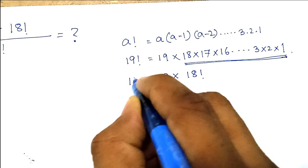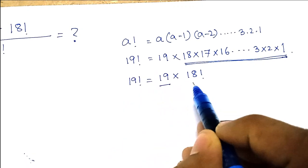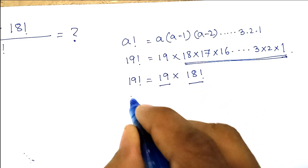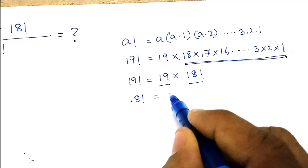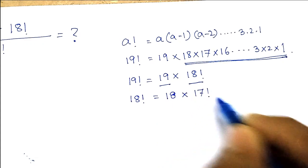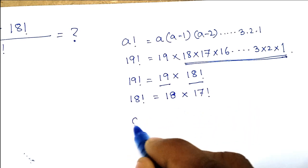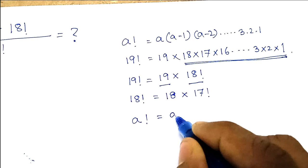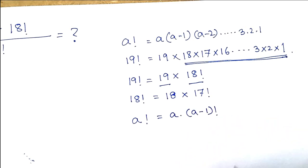So factorial of 19 is equal to 19 into 18th factorial. Similarly, 18th factorial we can also write as 18 into 17th factorial. So this is a formula: factorial of a is equal to a into (a minus 1)'s factorial.